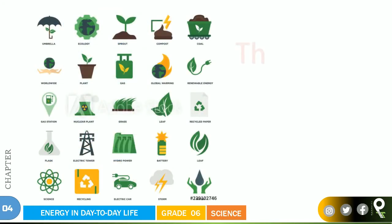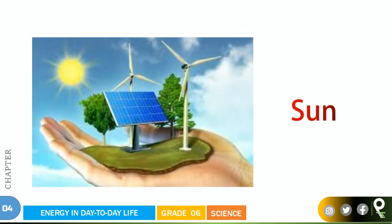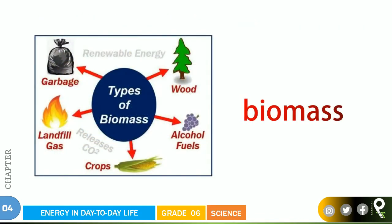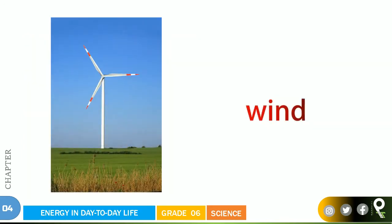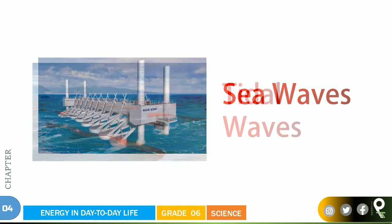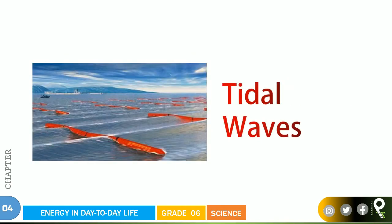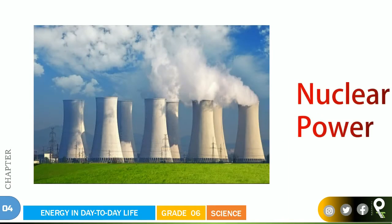As we now know, wind energy is used to rotate the propeller and solar energy is used in the solar thermal cooker. There are a large number of energy sources. Out of those, we are going to learn about sun energy, biomass energy, fossil fuel, wind energy, running water energy, sea waves energy, tidal waves energy, geothermal energy, and nuclear power.